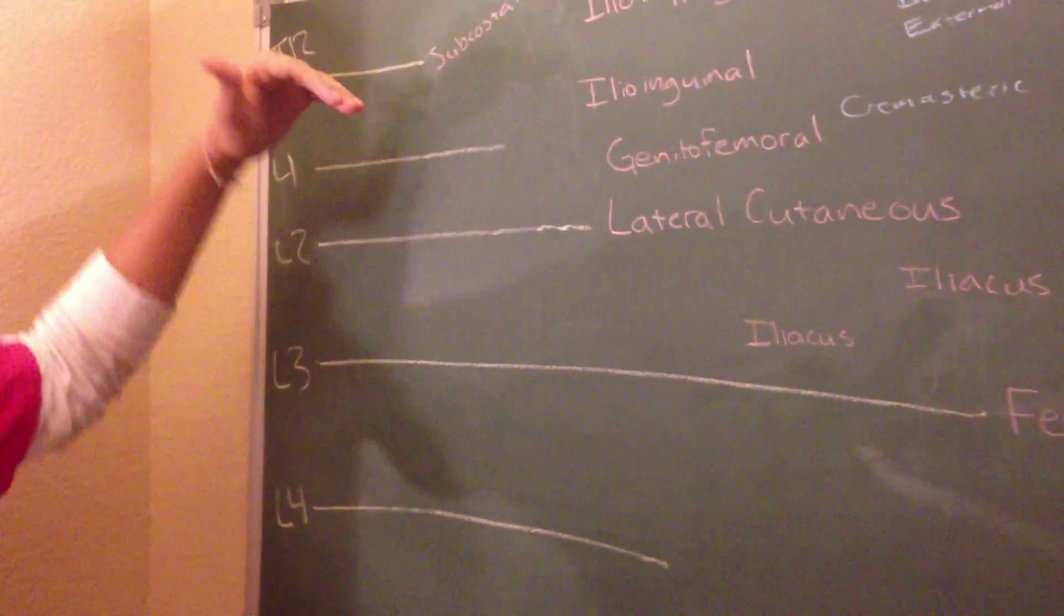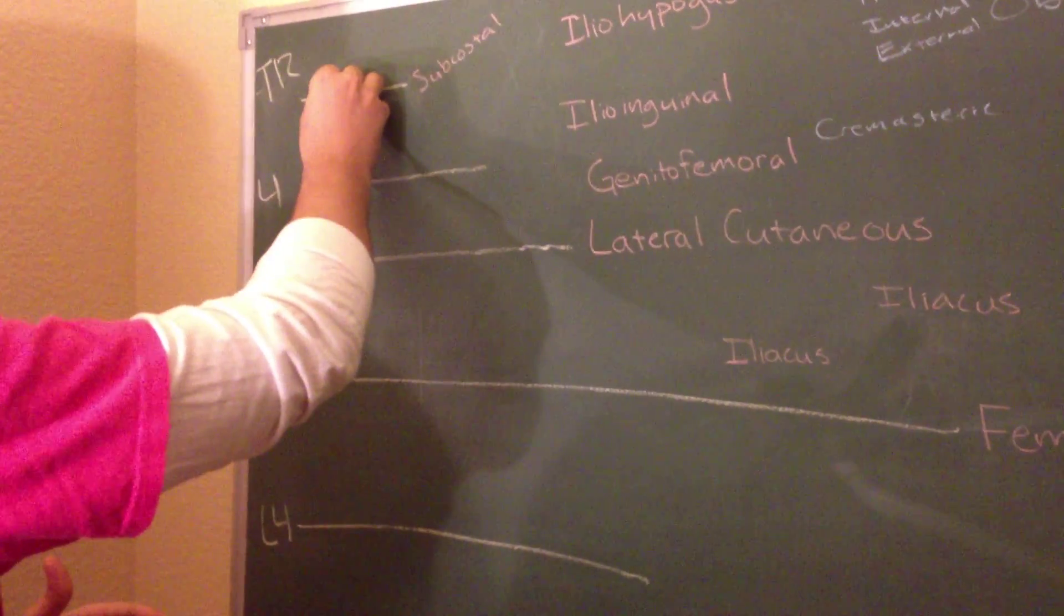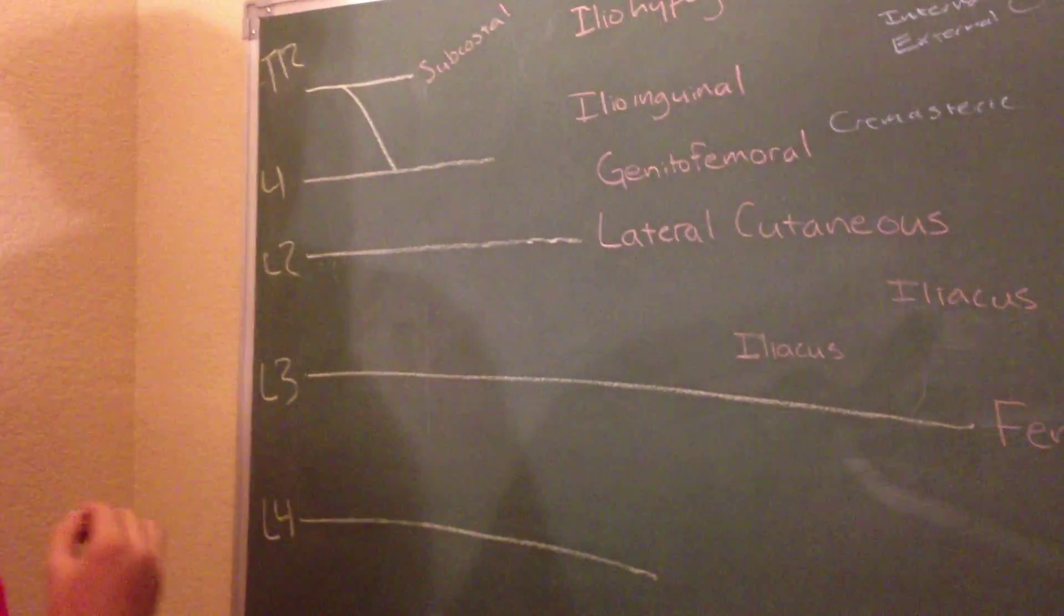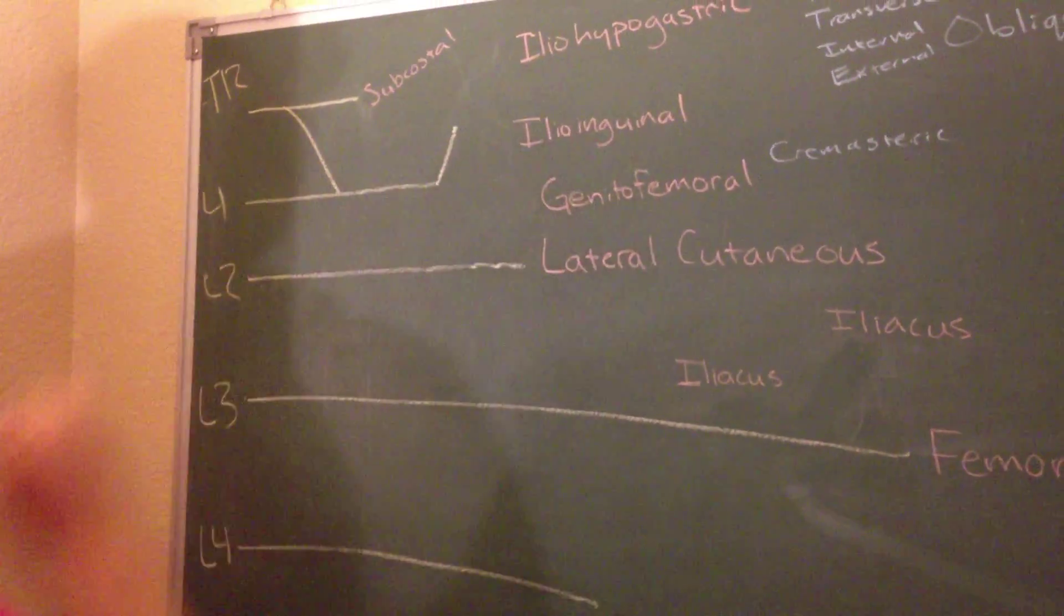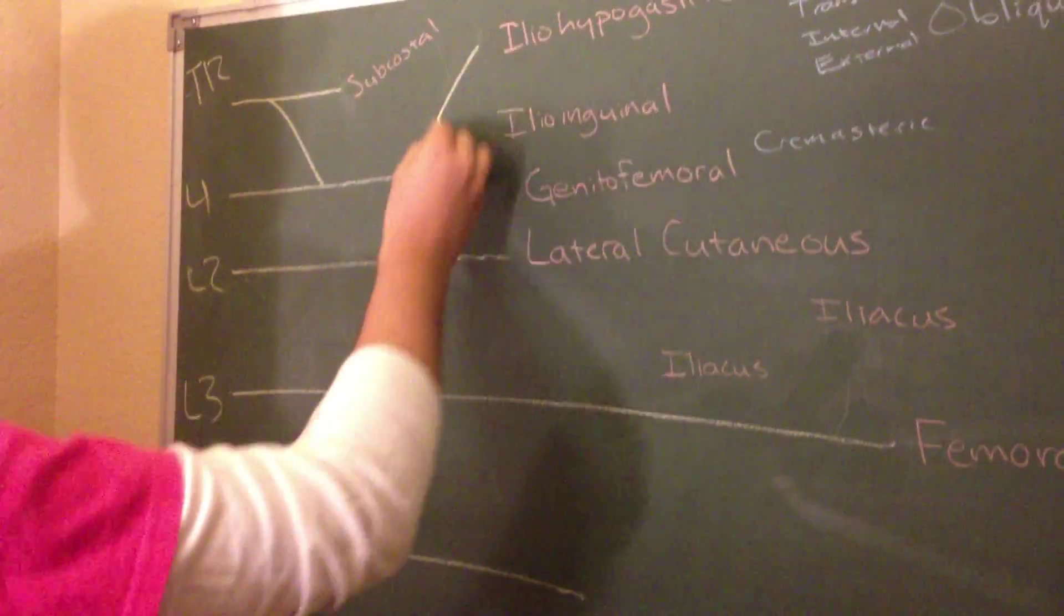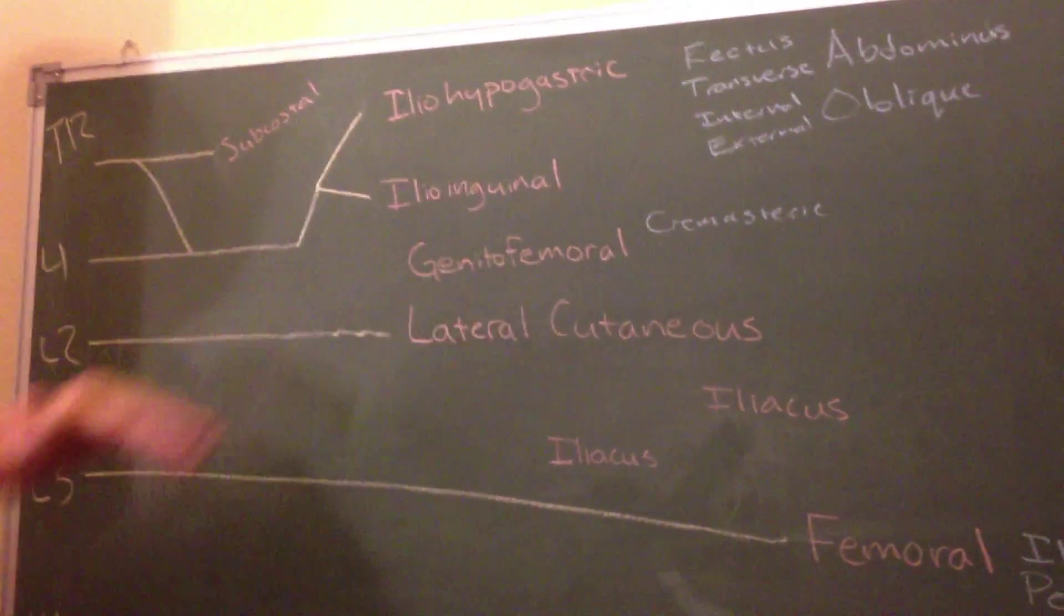Now we want to start getting the connecting branches between all of these nerves. First you want to do is connect T12 to L1, then draw a superior branch off of L1, which will break up into an arrow connecting to the iliohypogastric and the ilioinguinal nerves.